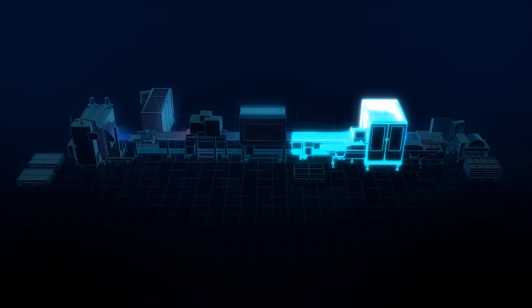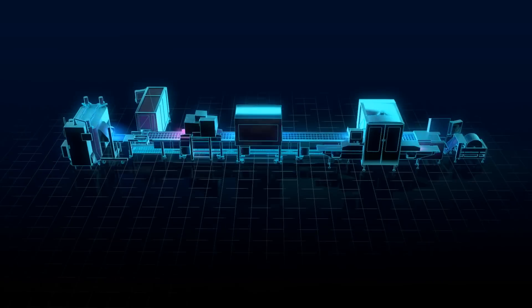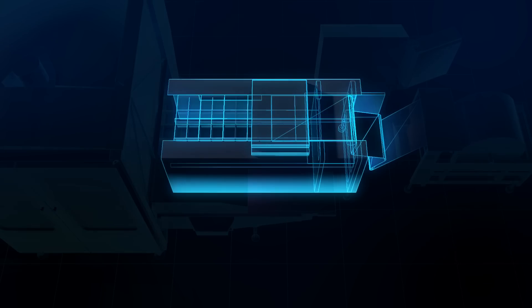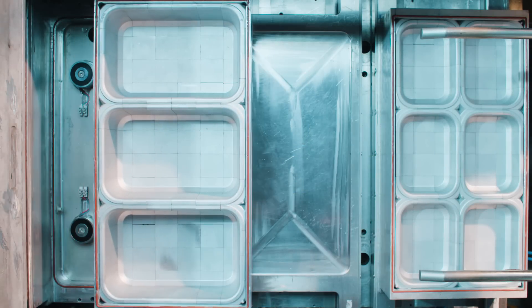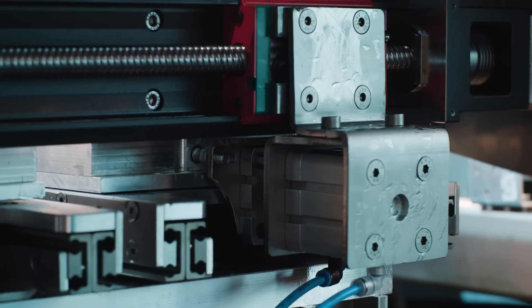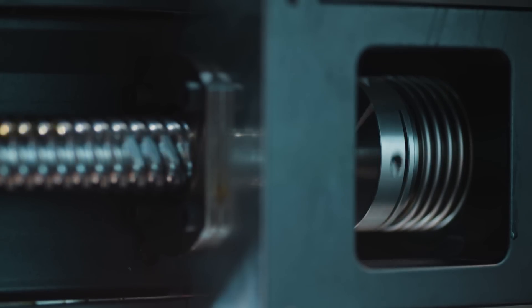Pick and Pack consists of several smart modules, each with its own important function. It all starts with the flexible thermoformer, which determines the exact dimensions of the packaging.